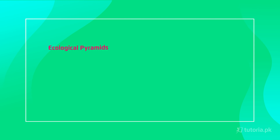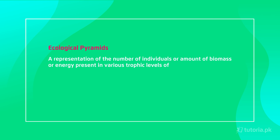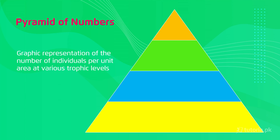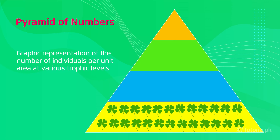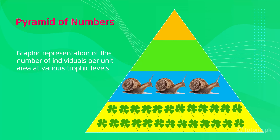We show the flow of material in the form of pyramids. A pyramid is a representation of the number of individuals, the amount of biomass, or the energy present at various trophic levels of a food chain. The first type is the pyramid of numbers — a graphic representation of the number of individuals per unit area at various trophic levels. Producers, which are plants, exist in large numbers at the base. Primary consumers are fewer, secondary consumers even fewer, and at the top of the pyramid exist the smallest numbers.